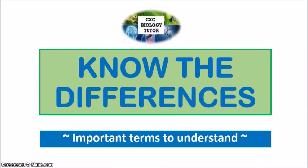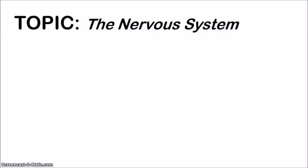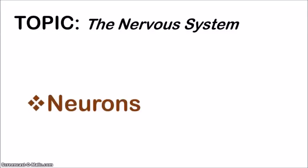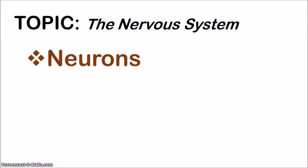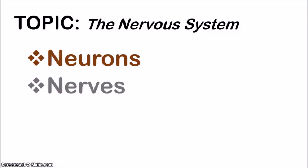Hey, it's Michelle, your CXC biology tutor again. Welcome back to the Know the Differences series, in which I go through with you important terms that you need to understand. In this video, I'll be looking at the nervous system, and I'll be paying special attention to the differences between the neurons and the nerves. By the end of this video, you should know the differences between these two parts of the nervous system. Alright, let's begin.